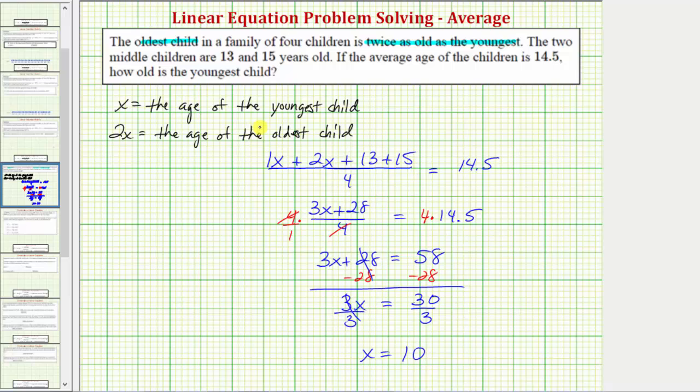Remember, x is the age of the youngest child. And the question is, how old is the youngest child? So it is important that we make sure that we answer the question that's being asked. So let's write the answer as a complete sentence. The youngest child is 10 years old.